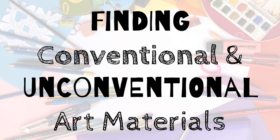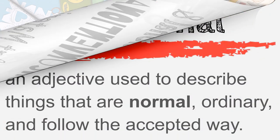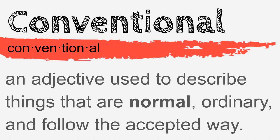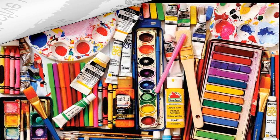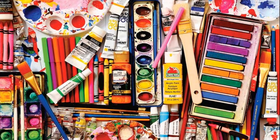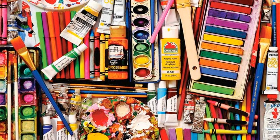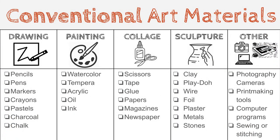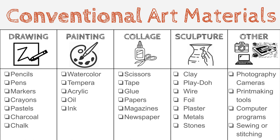Finding conventional and unconventional art materials. Conventional is an adjective used to describe things that are normal, ordinary, and follow the accepted way. Conventional art materials might be supplies you would find in the art room. Materials that are traditionally used by artists such as pencils, paints, paper, glue, and clay would all be considered conventional.